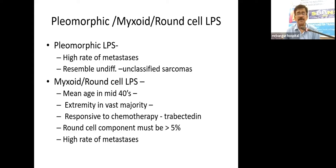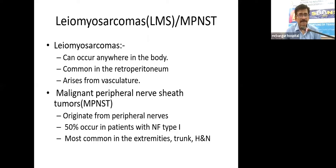Round cell and pleomorphic liposarcomas occur more in extremities and may resemble undifferentiated sarcomas. Some round cell liposarcomas respond to newer chemotherapy agents like trabectedin. To diagnose round cell sarcoma, the round cell component must be more than five percent. These tumors have higher incidence of metastasis.